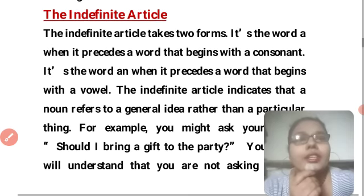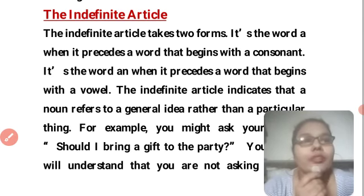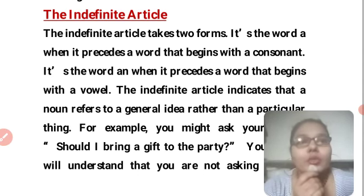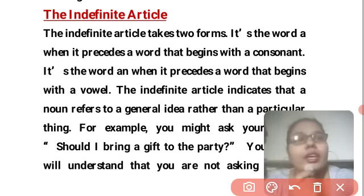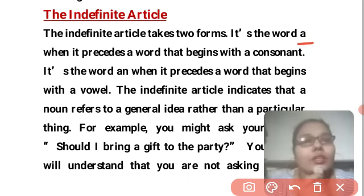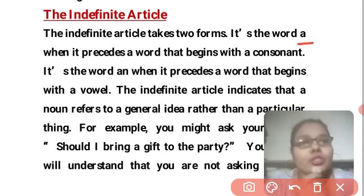Now the indefinite article takes two forms. One is 'a', used before words that begin with a consonant. The other is 'an'. We use 'a' when the word or noun begins with a consonant sound.